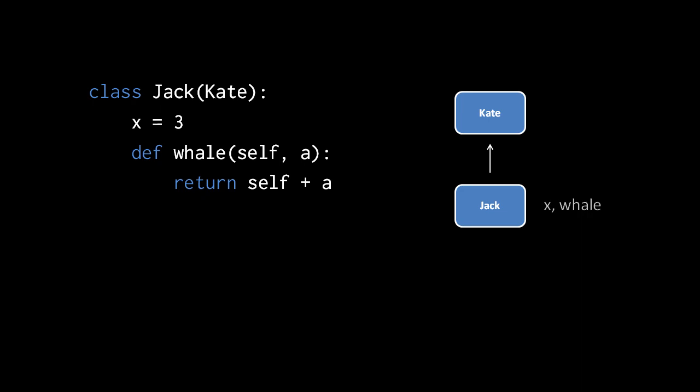Now the body in this class can contain any code we want, but any names we assign to in the class body get added as attributes to the class object. So in this class statement, a class object is being created which inherits from Kate. That class object has two attributes, one x with the value 3, and the other named whale with a function object.